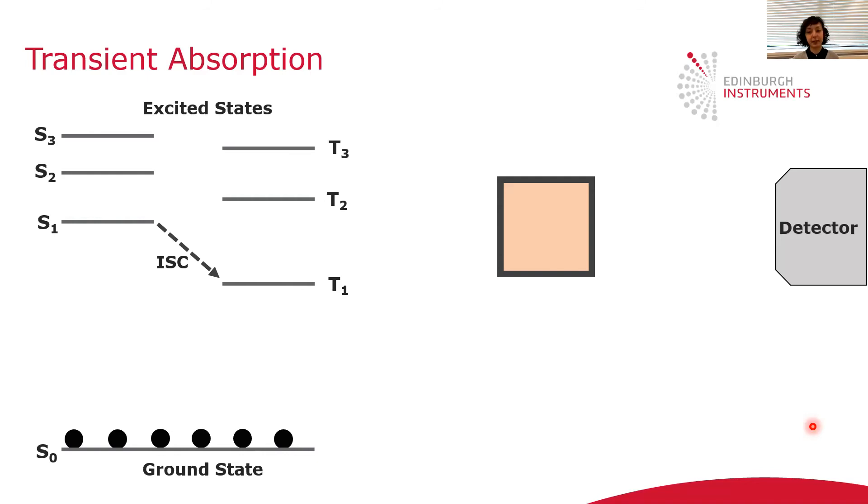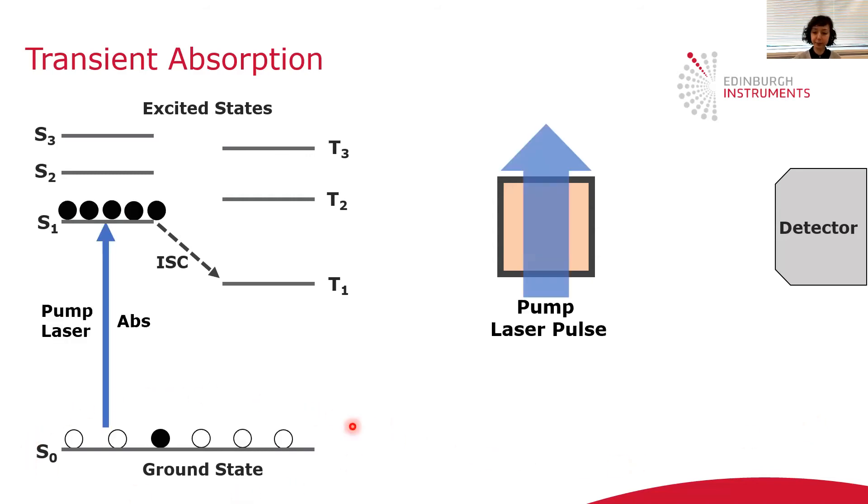Let's look in detail at what happens in one of these pump and probe experiments. We start with a population of molecules, mostly in their ground state. And first, the sample is excited with the pump pulse, which is a high-energy laser pulse. This pulse creates a high population of molecules in their excited state, S1.